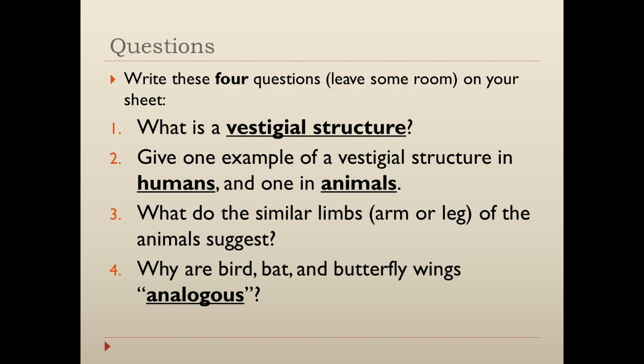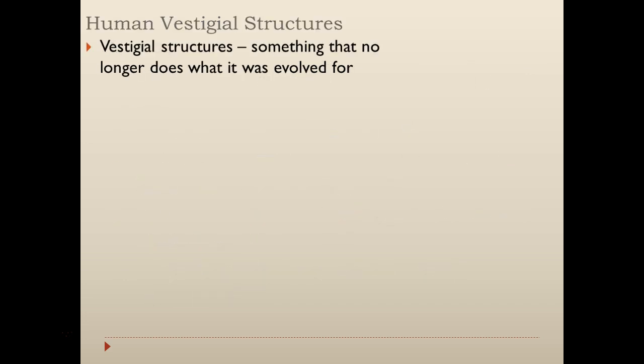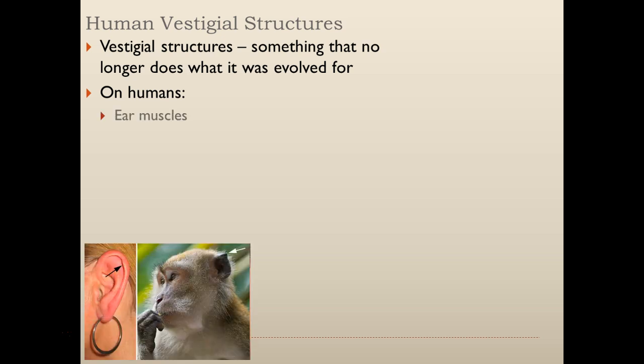Pause the video right here and copy down those four questions. Okay, let's talk about human vestigial structures. A vestigial structure is something that no longer does what it was originally evolved for. On humans, we have a couple examples.